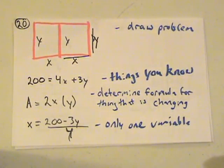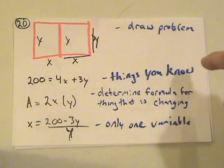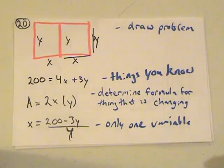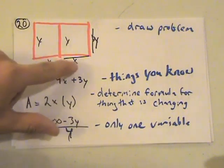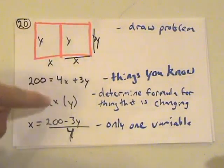So after you draw the problem to understand what you're looking at, then you do the things that you know. You know that we have 200 feet of fencing and that's the perimeter plus the middle bar of fencing. So we have to set it to the problem where we have four sides, four x's that we have to cover and also three y's. So that's what we know.